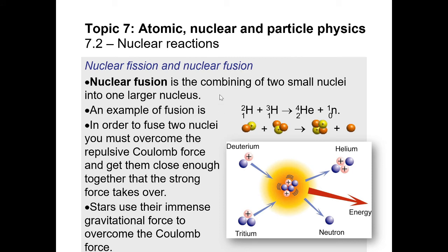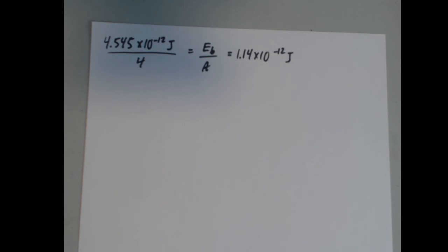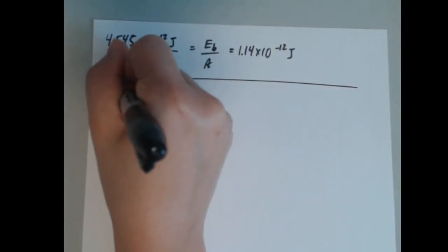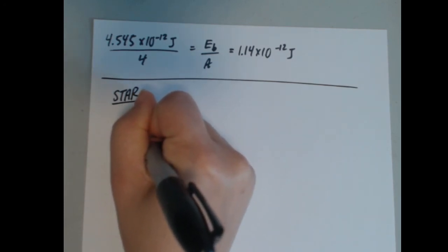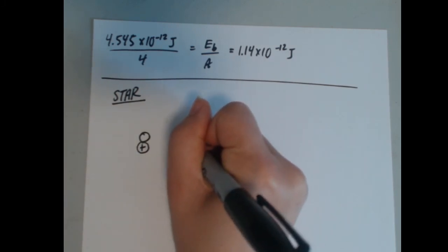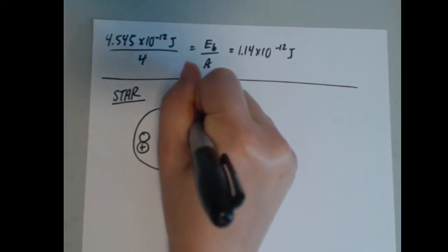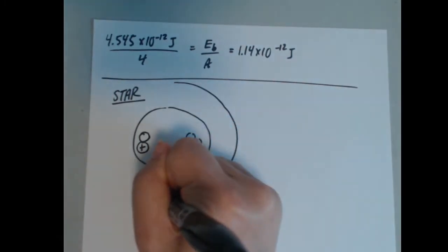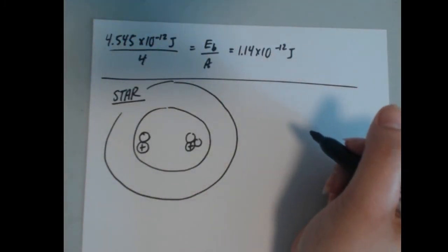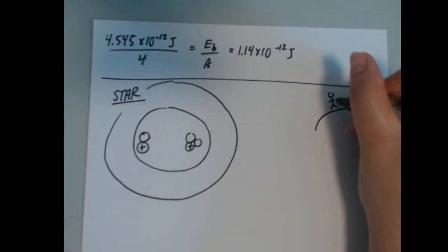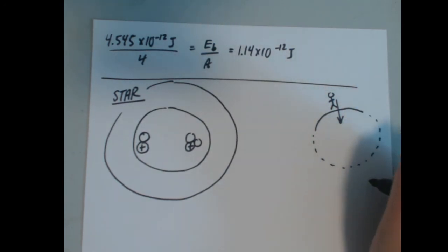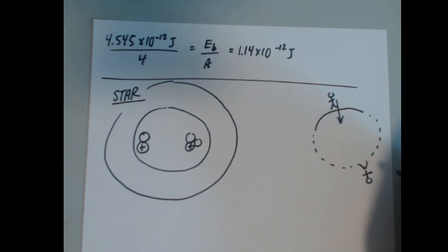Stars overcome the Coulomb repulsion naturally. Due to their enormous mass, stars exert tremendous gravitational attraction that compresses the particles in their cores to extreme densities and temperatures, forcing the nuclei close enough to fuse. When on Earth, gravity pulls you toward the center of the Earth; someone on the opposite side of the world experiences the same pull toward the center from their perspective — illustrating how gravity acts inward from all directions toward the center of a massive body.